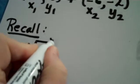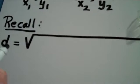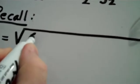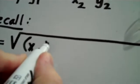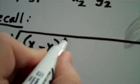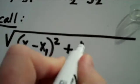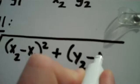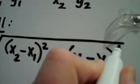The distance formula says to take the square root, big old square root of x sub 2 minus x sub 1 squared, plus y sub 2 minus y sub 1 squared.